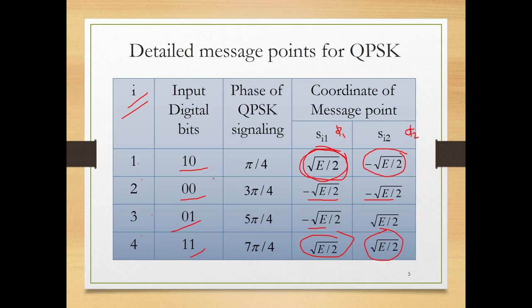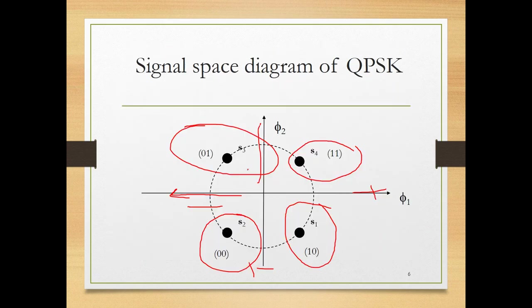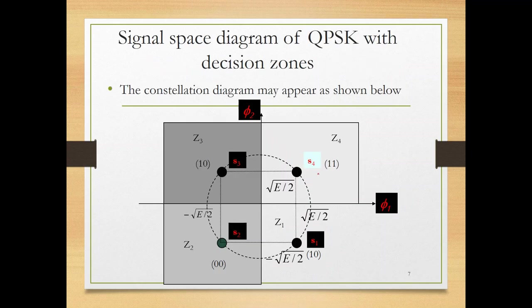You can assign different bit groupings to constellation points, but the transmitter and receiver must agree on the same mapping table. If they don't agree, the receiver demodulates incorrectly, so both sides must use the same mapping table.